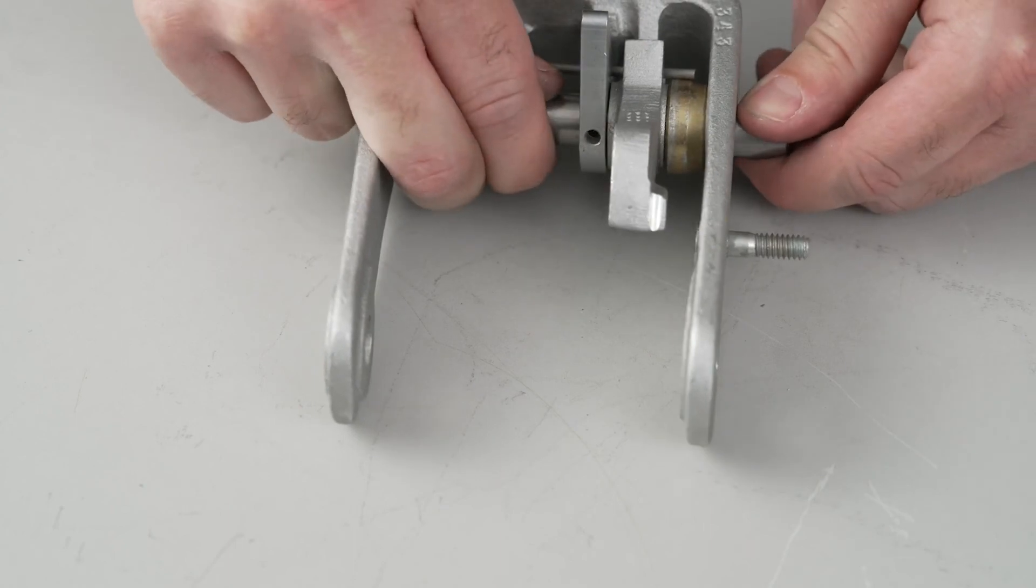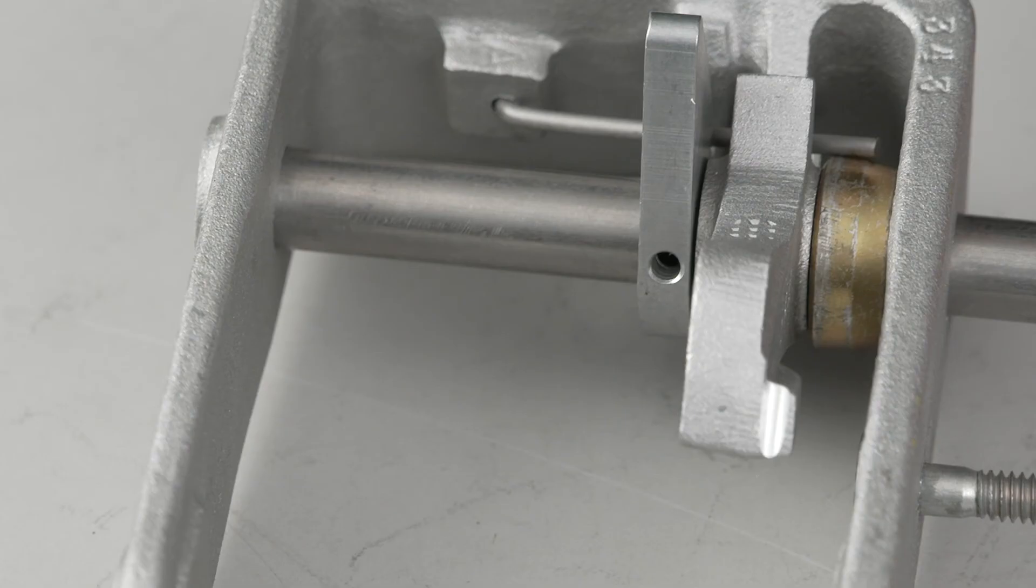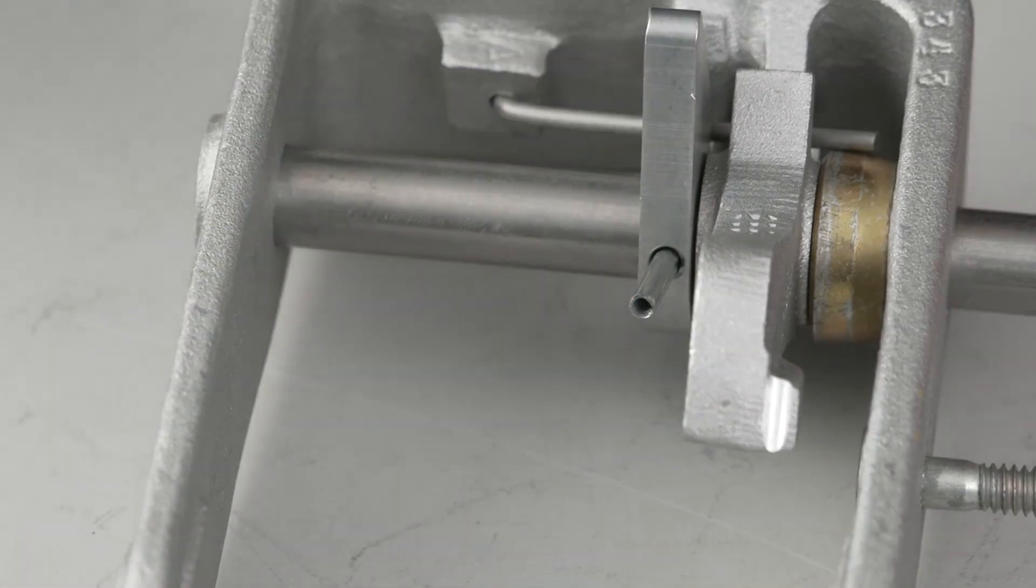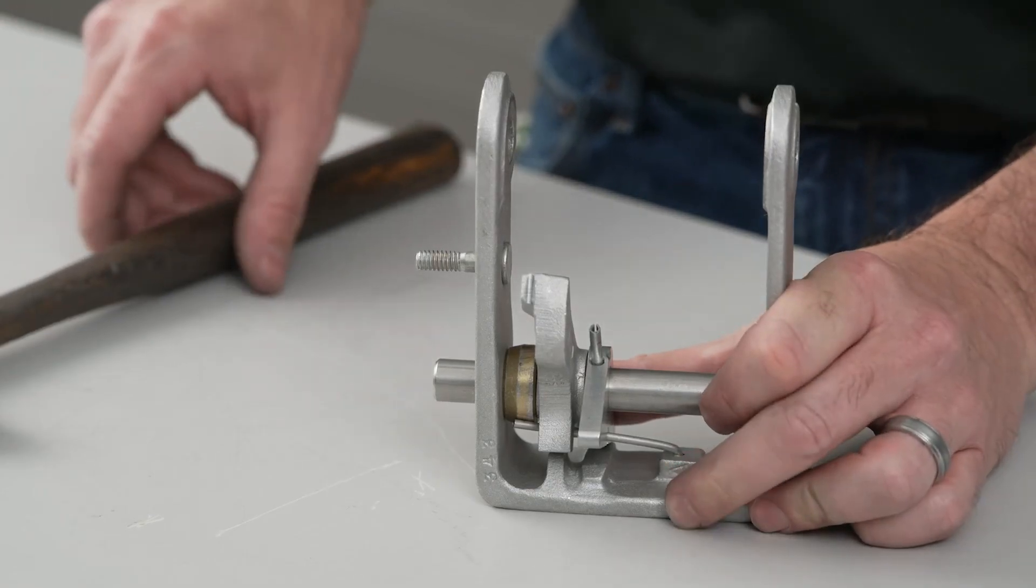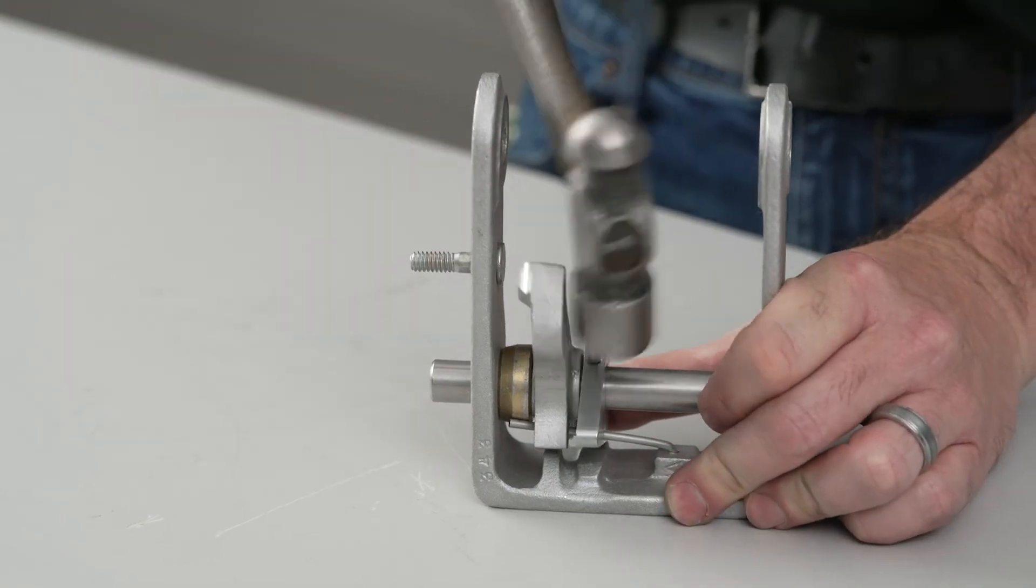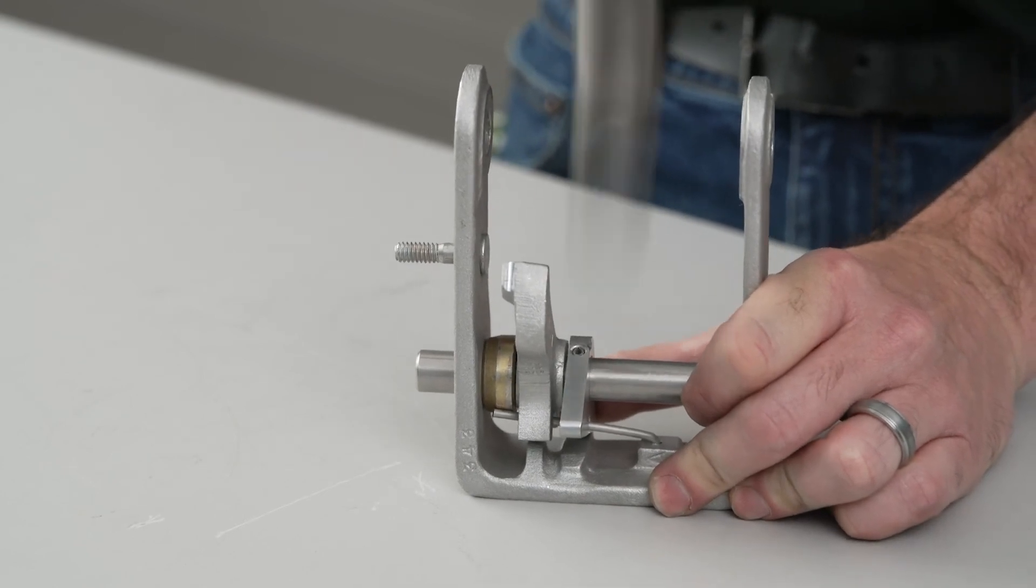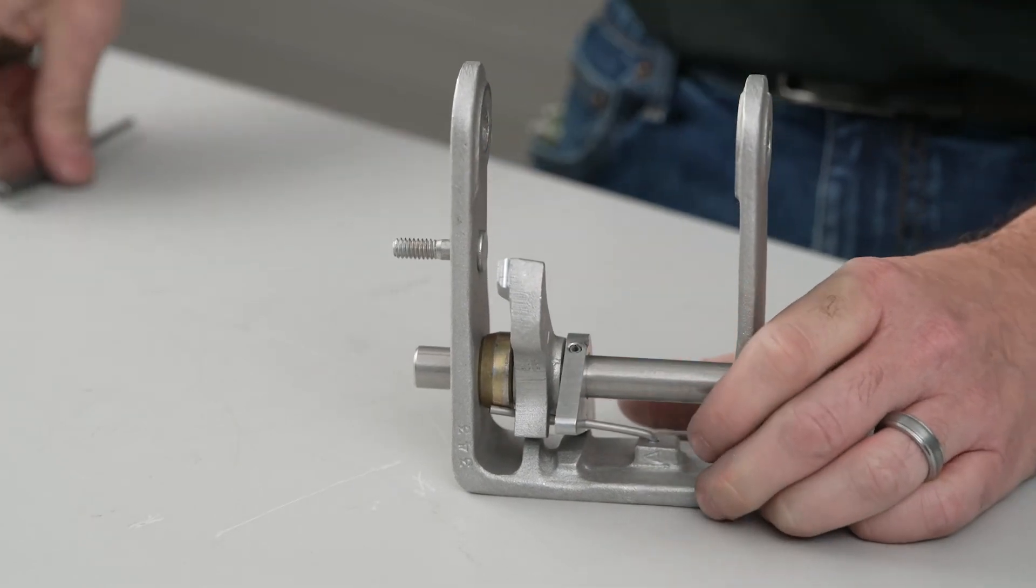Align the through hole in the Reversing Lever with the through hole in the new U-Frame Pawl Shaft and insert a new Roll Pin. Hammer the Roll Pin into the Reversing Lever and U-Frame Pawl Shaft. Ensure that the Roll Pin is flush with the surface of the Reversing Lever.